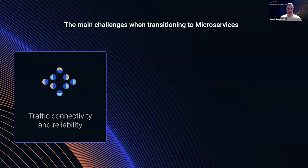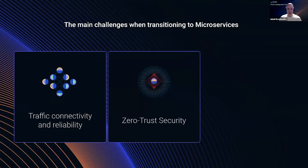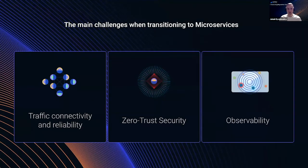And of course you would like to leverage the fact that you are using microservices, so you probably need some special load balancing for A/B testing, canary deployments, and so on. The second challenge is how to achieve security, because the network is not secure by default — you need TLS connections between your services. And then there is observability. When you go with distributed systems, you need to have great observability, otherwise it will be really hard to troubleshoot problems.